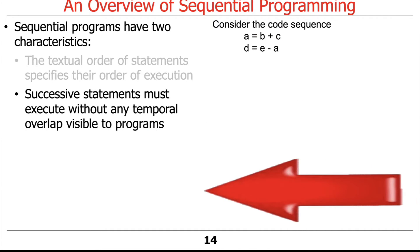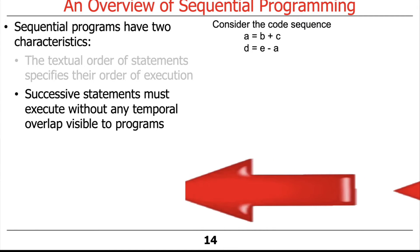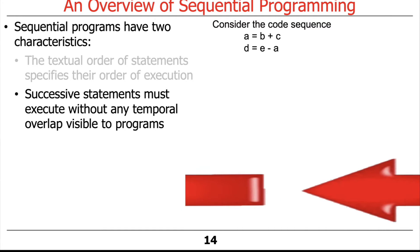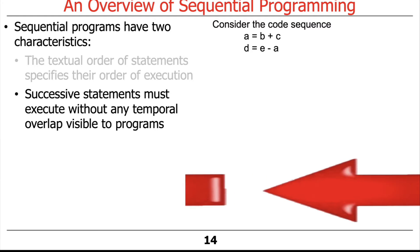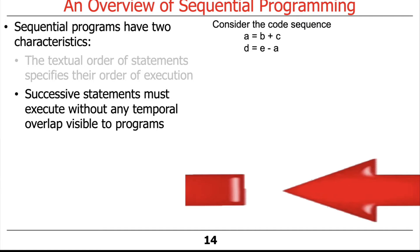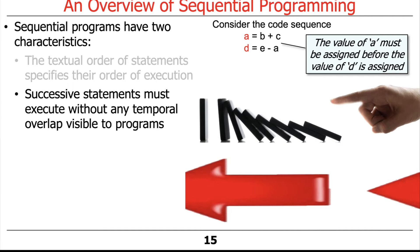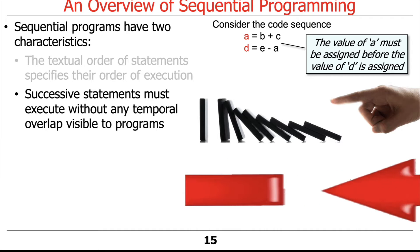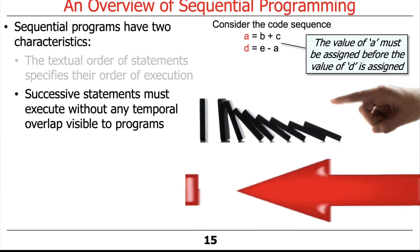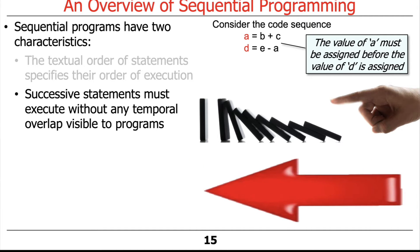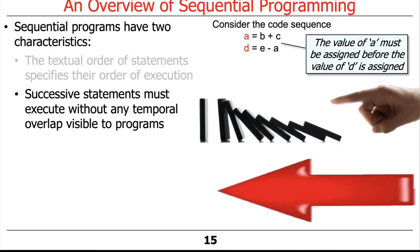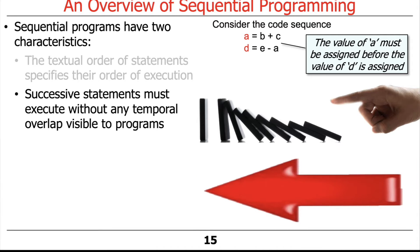The second characteristic of sequential programs is that successive statements must execute without any temporal overlap visible to programs or programmers. For example, given the code sequence A = B + C and then D = E - A, the value of A has to be assigned before the value of D is assigned, because D depends on A. If A is computed after D, D is going to have a very strange result — not what you'd expect semantically.